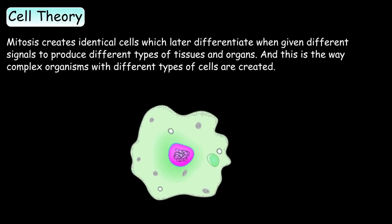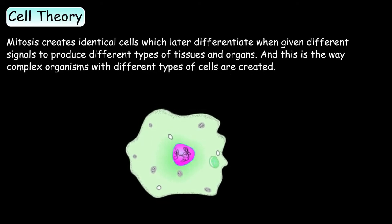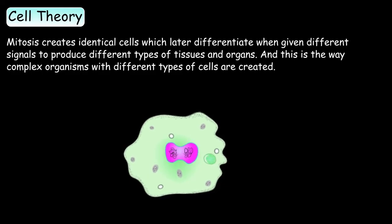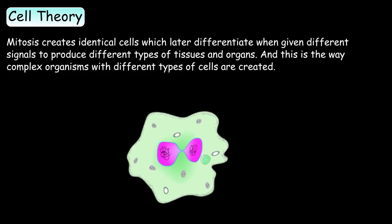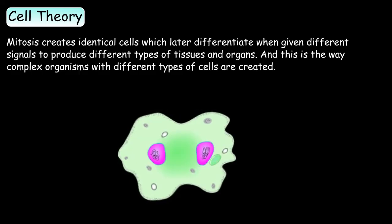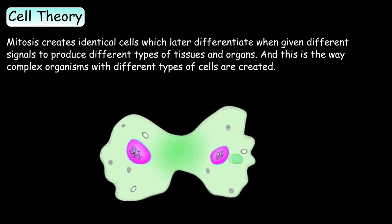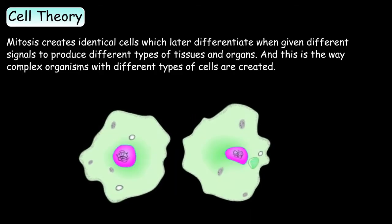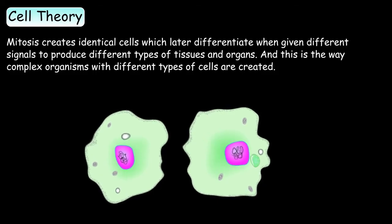Organisms start as a single cell and through a process of cellular division called mitosis, they grow and change into multicellular organisms. Mitosis creates identical cells which later differentiate when given different signals to produce different types of tissues and organs. And this is the way complex organisms with different types of cells are created.